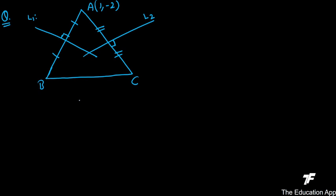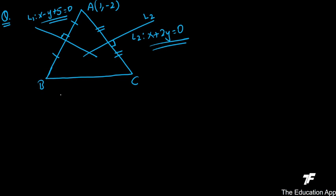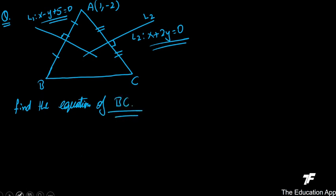The equation of L1 is x - y + 5 = 0, and the equation of L2 is x + 2y = 0. L1 and L2 are perpendicular bisectors of AB and AC respectively. The question asks us to find the equation of BC.